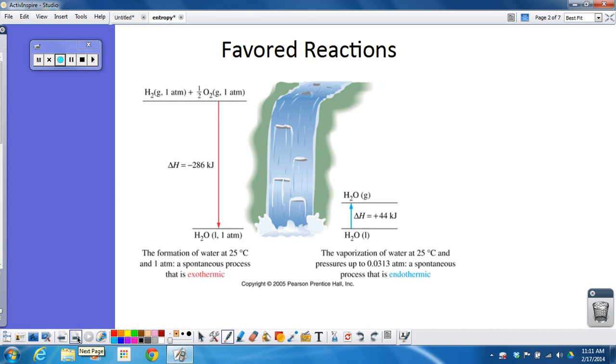So favored reactions. We can look at the delta H for a reaction. And in general, if the delta H is negative, then the reaction is favored. And if delta H is positive, then the reaction is not favored. However, that is not always true.